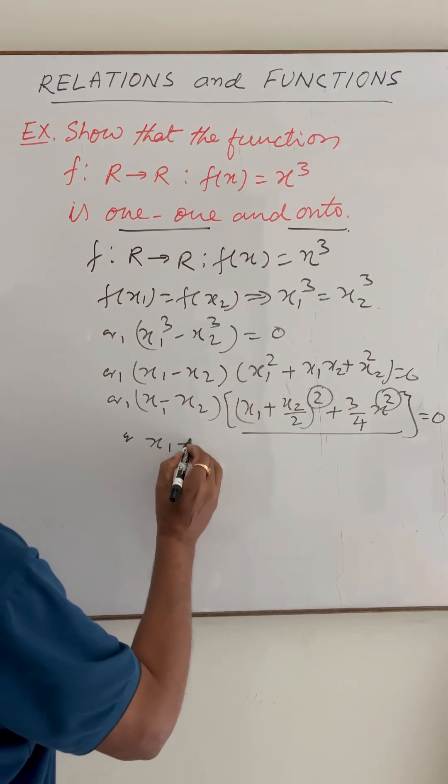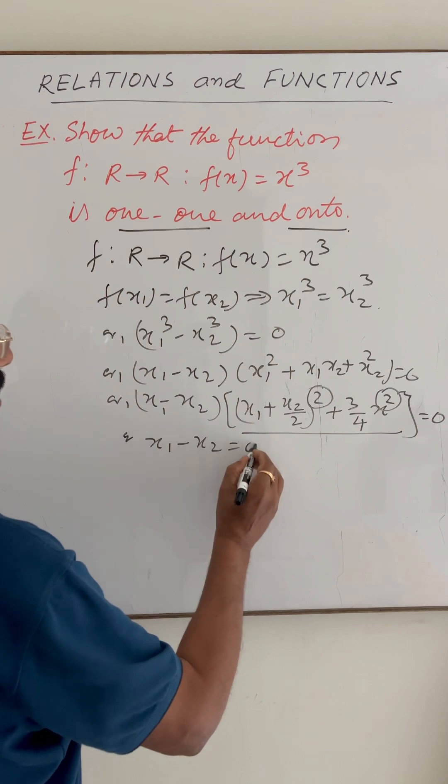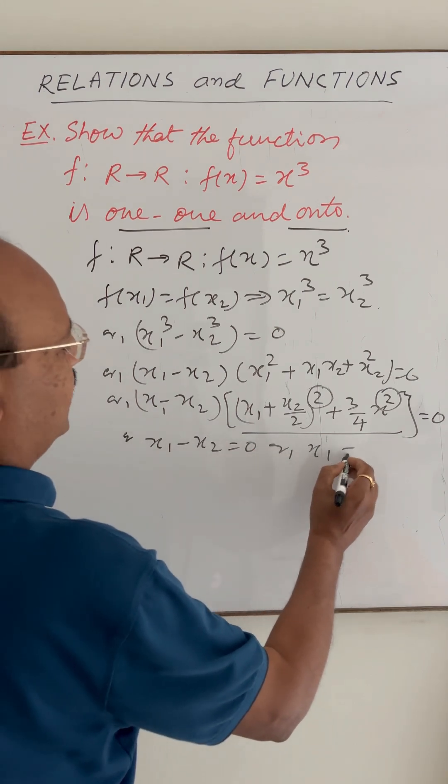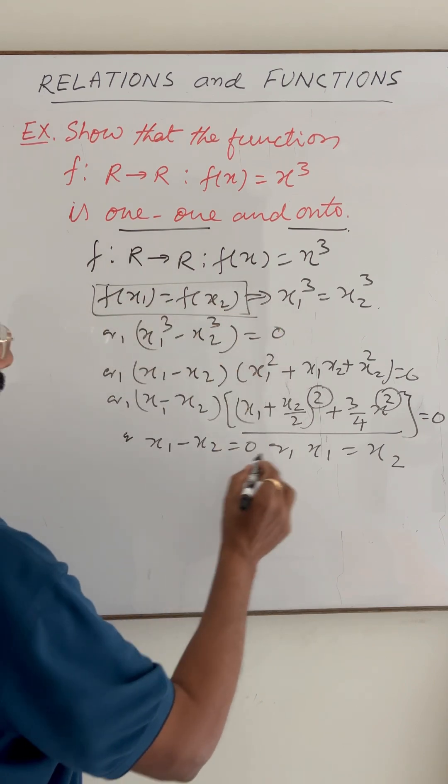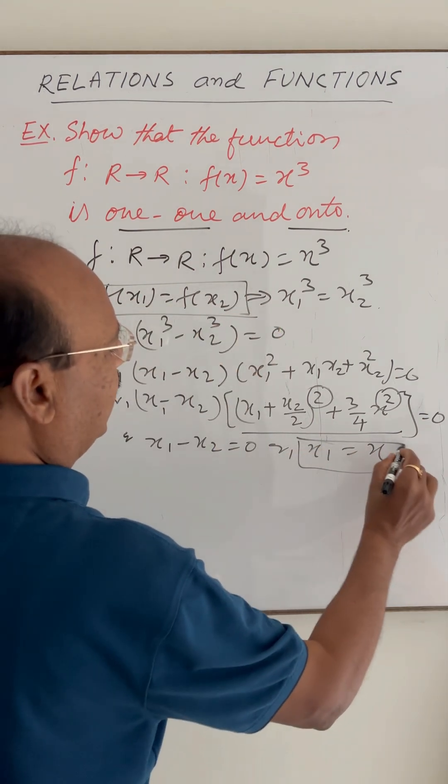So x₁ minus x₂ is equal to zero or x₁ is equal to x₂. So here f(x₁) is equal to f(x₂) implying x₁ is equal to x₂.